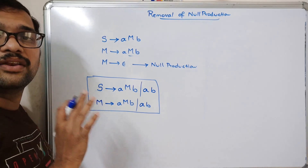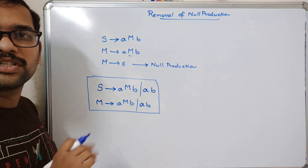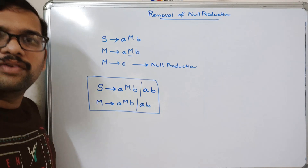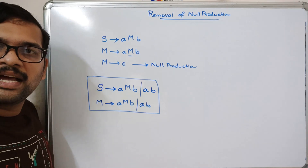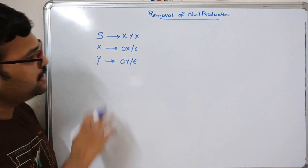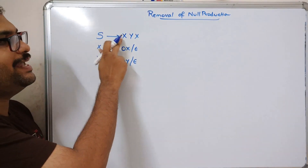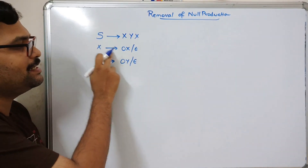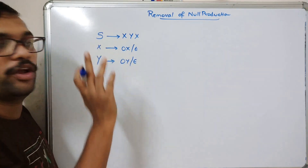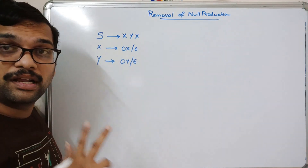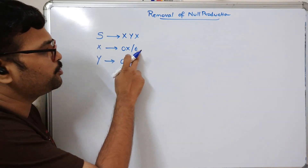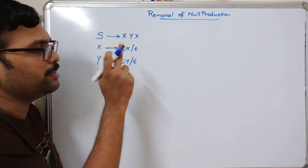This is how we remove null productions. Let us consider one more example: S → xyx, x → 0x | ε, y → 0y | ε. Here we have two null productions: x → ε and y → ε.